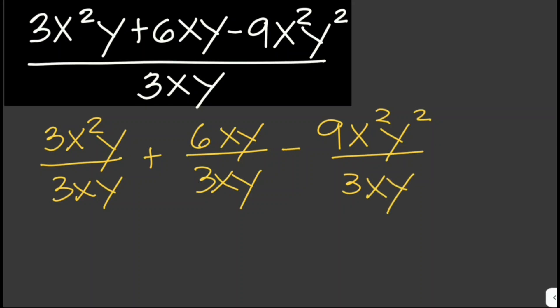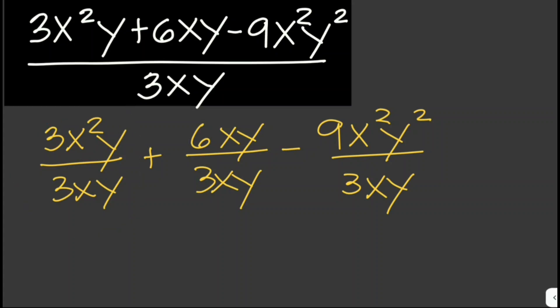Now let's divide each term. We divide 3x²y over 3xy. The 3s cancel out, y cancels out, and x² divided by x — we subtract the exponents: 2 minus 1 — so we are left with just x.